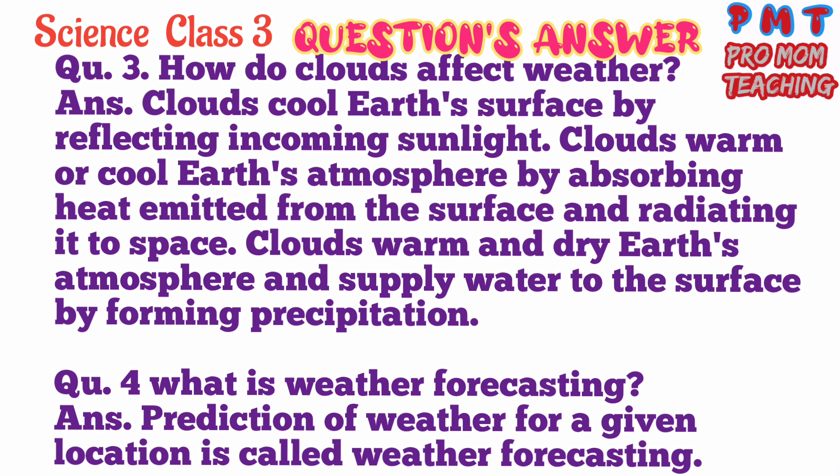Question number three. How do clouds affect weather? Answer: clouds cool Earth's surface by reflecting incoming sunlight. Clouds warm or cool Earth's atmosphere by absorbing heat emitted from the surface and radiating it to space. Clouds warm and dry Earth's atmosphere and supply water to the surface by forming precipitation.